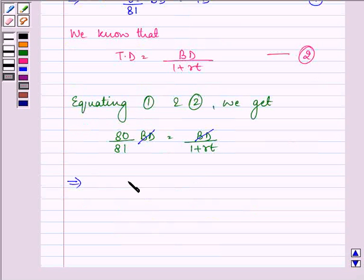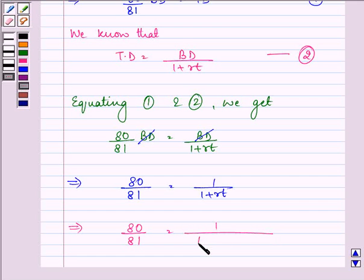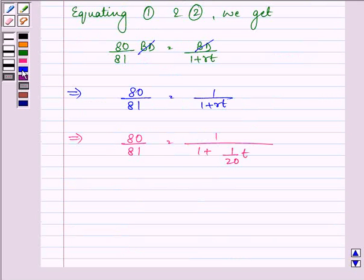So we have 80 upon 81 equal to 1 upon 1 plus RT. Let us substitute the value of R that is found out above as 1 upon 20. On further solving it we have 80 upon 81 equal to 20 upon 20 plus T.